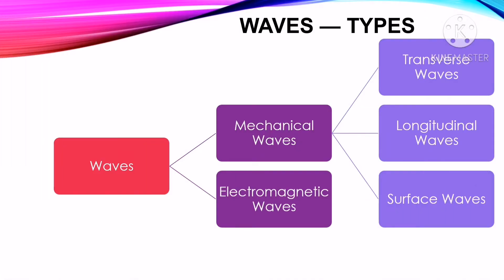What are the types of waves? Waves can be classified into two: mechanical waves and electromagnetic waves. Mechanical waves have three types: transverse waves, longitudinal waves, and surface waves.